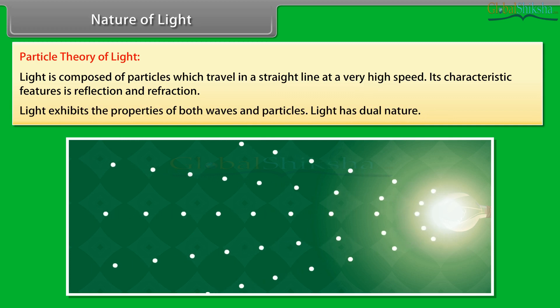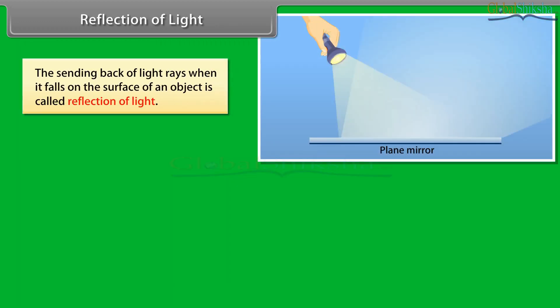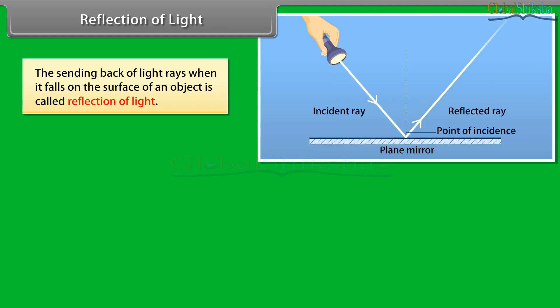Light exhibits the properties of both waves and particles. Light has dual nature. Reflection of light: The sending back of light rays when it falls on the surface of an object is called reflection of light.